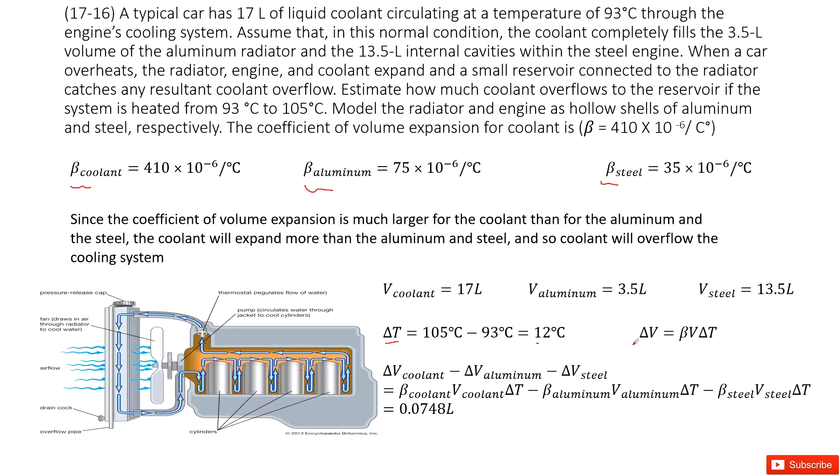So this is our strategy to find delta V coolant minus delta V aluminum and minus delta V steel, right? For each one, we have the function to describe delta V with delta T. So we just input delta V coolant as beta coolant V coolant delta T. Similarly, for this one and this one.